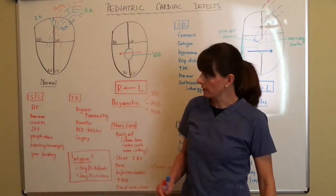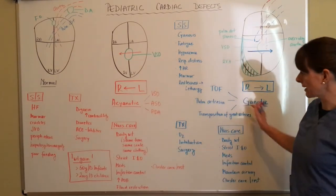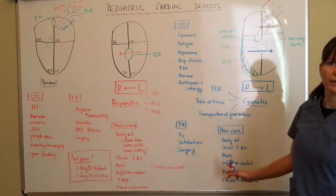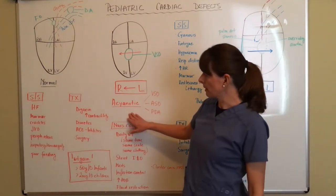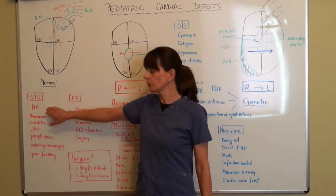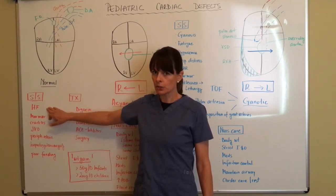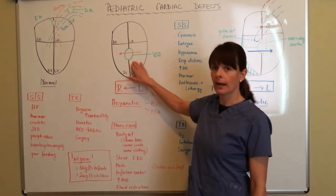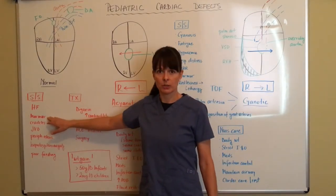So I've color coded them here. So everything acyanotic will be in red and everything cyanotic will be in blue because the baby will be blue. So signs and symptoms for acyanotic heart defects are all those signs and symptoms of heart failure, just like in adults. Now, in addition here, because we have this big abnormal opening, we're going to hear a pretty significant murmur in these patients.